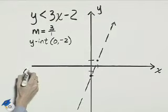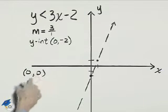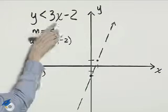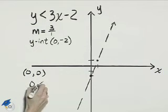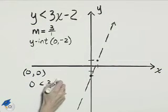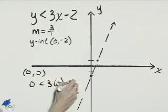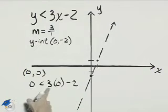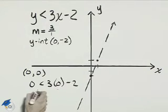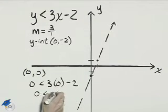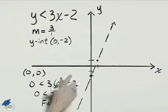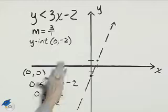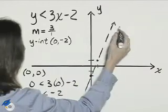Using the test point (0, 0) and putting those values in for y and x, we have 0 is less than 3 times 0 minus 2. That gives us 0 less than negative 2, which is not true, so we shade on the opposite side of that line.